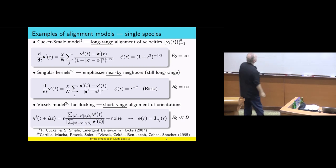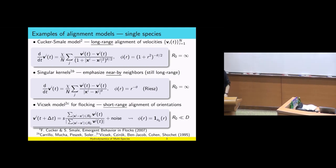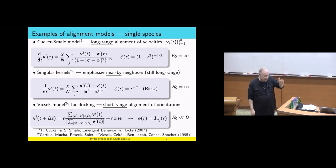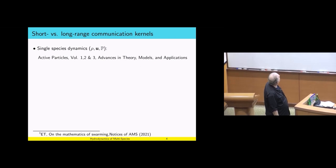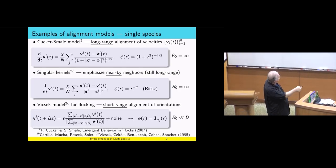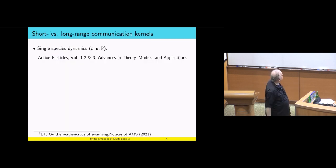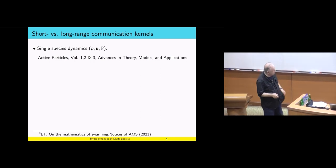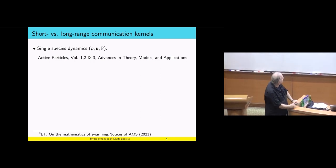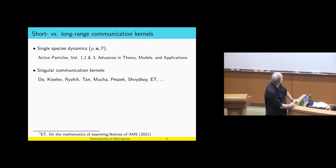These are canonical examples we have in mind for communication kernels. They either decay, have compact support, or are singular. There is a big difference: the first two are long-range interactions or singular, and the last one has short-range interactions. There are many papers in this series of volumes analyzing behavior depending on different kinds of kernels.